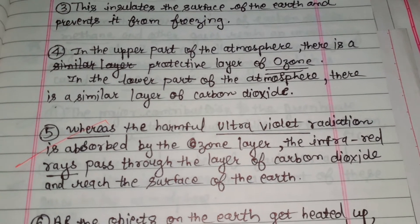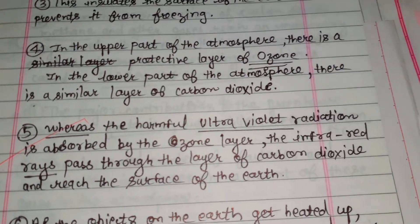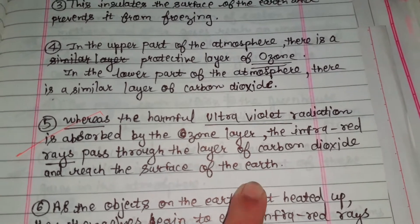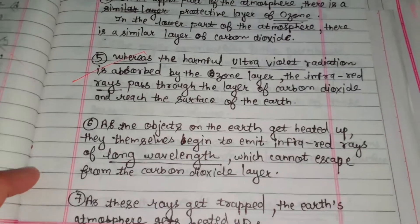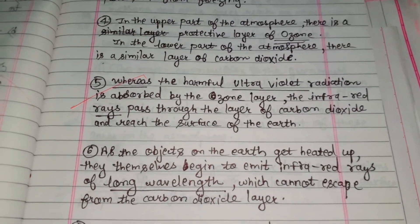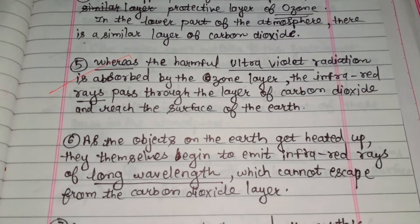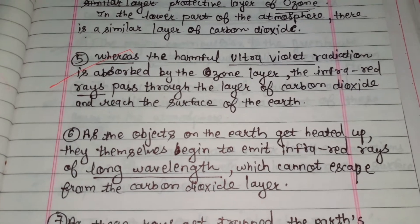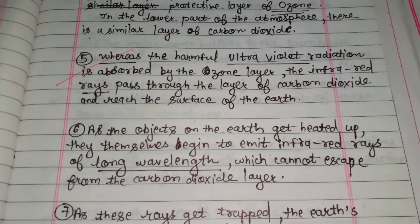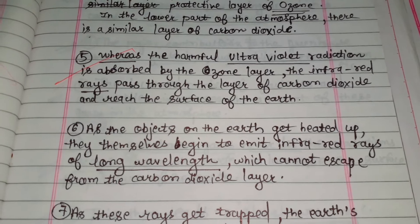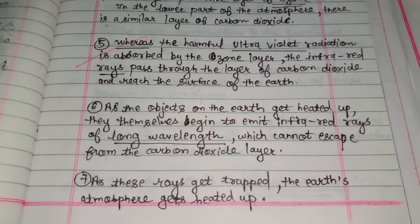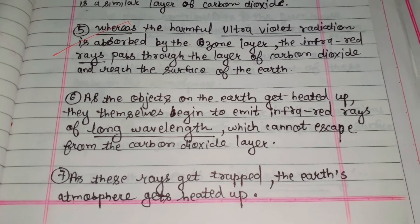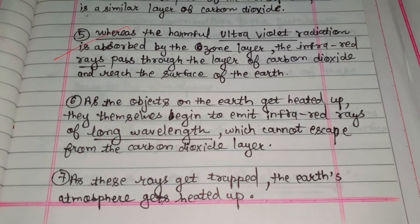The infrared rays pass through the layer of carbon dioxide and reach the surface of the earth. As the objects on the earth get heated up, they themselves begin to emit infrared rays of a long wavelength which cannot escape from the carbon dioxide layer. As these rays get trapped, the earth's atmosphere gets heated up.